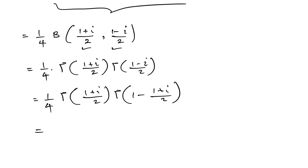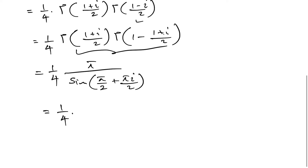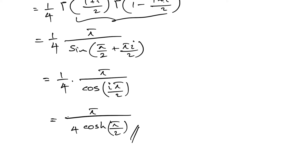Simplifying, the argument of the denominator gamma reduces to 1. We recognize this as Euler's reflection formula, giving pi over sine of pi times (1 plus i)/2, which equals pi over sine of pi/2 plus pi*i/2. Therefore the final answer is 1 over 4 times pi over cosine of i*pi/2, which equals pi over 4 times hyperbolic cosine of pi/2.